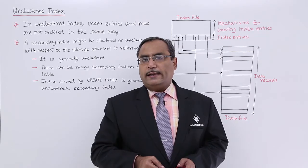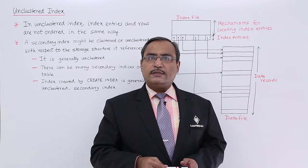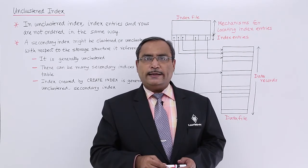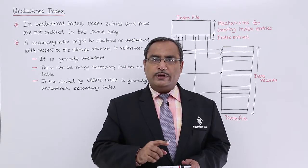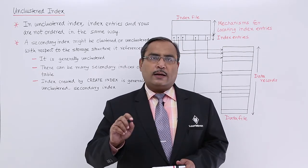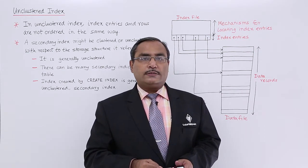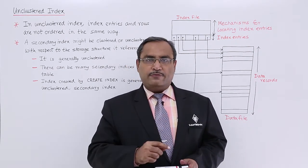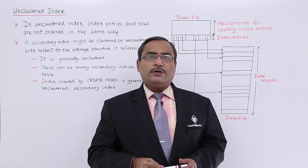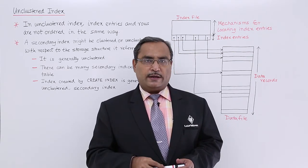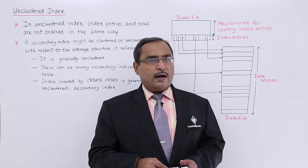We are discussing one topic: the unclustered index. In the previous video, we discussed the clustered index. In a clustered index, the indices are found in the same order in which the records or tuples exist in the data file. But in an unclustered index, the index entries' order is not the same as the order in which records exist in the data file. That is the basic difference between clustered and unclustered index.